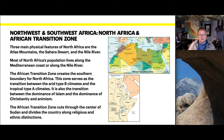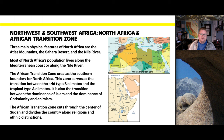Looking at North Africa and the African Transition Zone: the three main physical features of North Africa are the Atlas Mountains, the Sahara Desert, and the Nile. Most of North Africa's population lives along the Mediterranean coast or along the Nile. The African Transition Zone creates the southern boundary for North Africa, serving as a transition between arid type B climates and tropical type A climates, and also between the dominance of Islam and the dominance of Christianity and animism. This zone cuts through the center of Sudan, dividing the country along religious and ethnic distinctions.